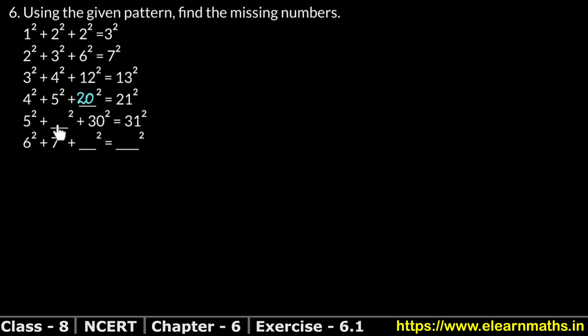In the same way, 5 multiplied by which number gives 30? We know 5 × 6 = 30, so that term is 6². And 6 × 7 = 42, so the next term is 42².